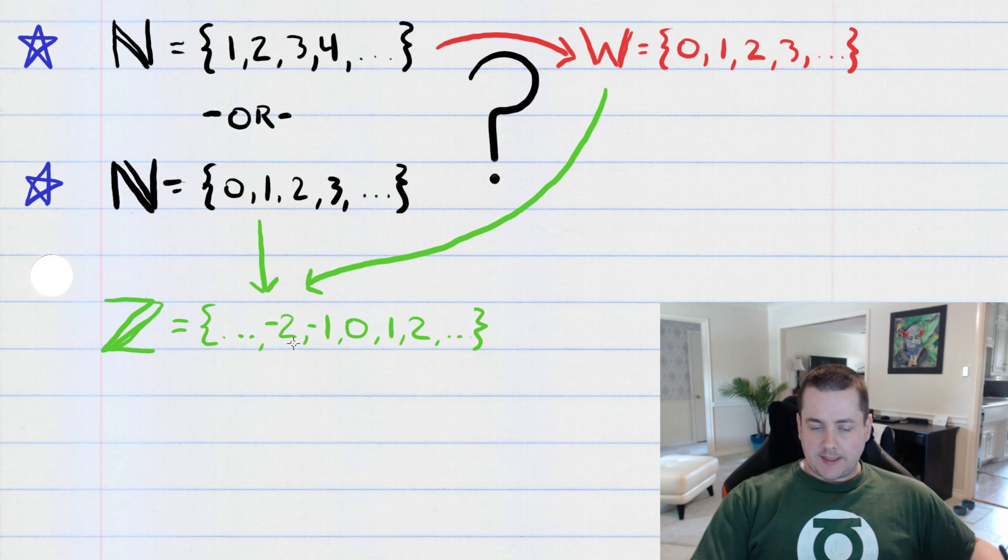So, at the end of the day, we get the same set of integers that we're used to, and then we can go on and define the rationals and the reals and the complex numbers and all of that wonderful stuff.